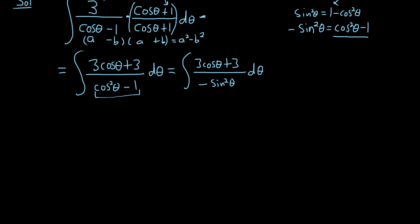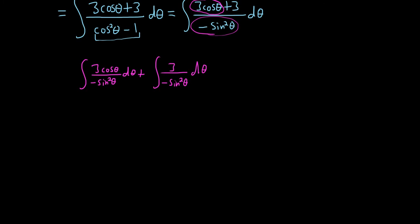So the first integral is going to be this 3 cosine theta over this bottom piece here. So it'll be 3 cosine theta over negative sine squared theta. And I should emphasize that this is an integral worth learning. Like this comes up. And then the next one is 3 over negative sine squared theta d theta. So just breaking it up.